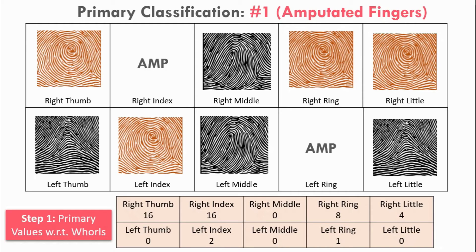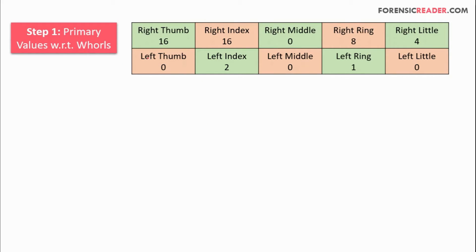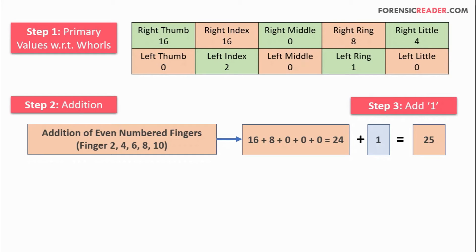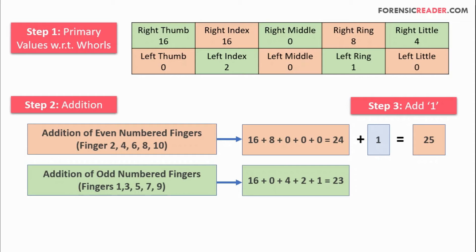For a practical example with amputated fingers: the FBI reference value 'AMP' is used for amputated fingers. The right index and left ring are amputated, so corresponding opposite hand finger values are used — both are whorls. After assigning values, the even-numbered fingers sum to 24, plus 1 gives a numerator of 25. The odd-numbered fingers sum to 23, plus 1 gives a denominator of 24. So the final primary classification number is 25/24.